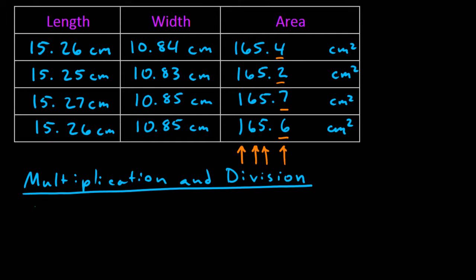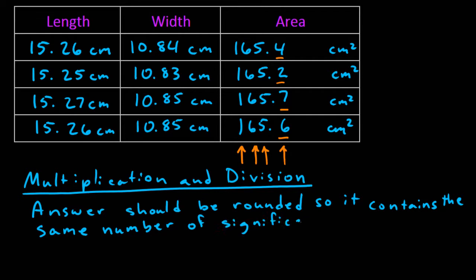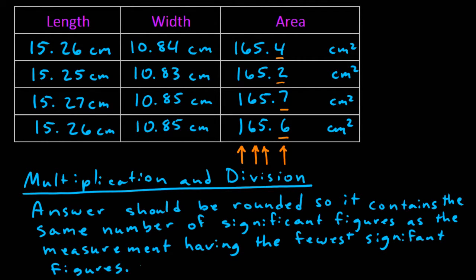This rule tells us that our answer should be rounded so it contains the same number of significant figures as the measurement having the fewest significant figures. As we can see from the example above, the length had four significant figures and the width had four significant figures. The fewest of four and four is four, which means our answer should be rounded to four significant figures. This explains why the uncertain digit in each answer lies in the fourth digit.